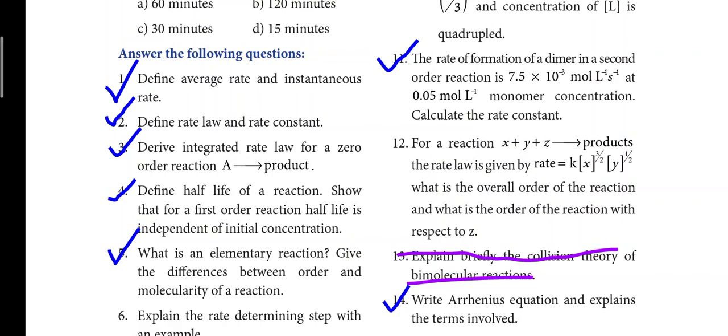Two more questions. Second question: define rate law and rate constant — it is also a two-mark question. Third: derive integrated rate law for a zero order reaction — A gives product. It is an important five-mark question. This covers zero order reaction and first order reaction — two questions, five marks.